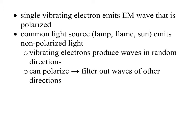So of course, just one single vibrating electron is going to emit an electromagnetic wave that's polarized. It's going to emit an electromagnetic wave that's oscillating in one direction. But of course, how often do you have just one single vibrating electron? You don't. Anything that really gives off light, lamp, flames, sun, they're all going to emit non-polarized light because of course you have vibrating electrons and they're vibrating in all different sorts of ways. So they are producing waves in random directions.